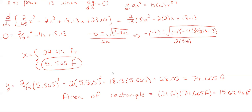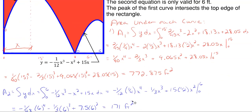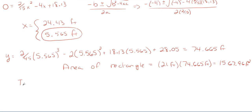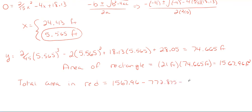We now have all three areas. The total red area equals the rectangular area minus the two white curve areas: 1567.96 minus 772.875 minus 171 equals approximately 624.084 square feet. That is our total approximation of the area above those curves in red inside the rectangle.